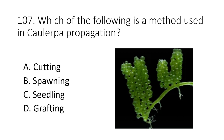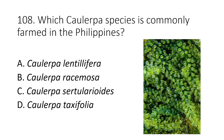Question 107. Which of the following is a method used in Caulerpa propagation? A. Cutting B. Spawning C. Seedling D. Grafting. The answer is A. Cutting. Question 108. Which Caulerpa species is commonly farmed in the Philippines? A. Caulerpa lentillifera B. Caulerpa taxifolia. The answer is A. Caulerpa lentillifera.